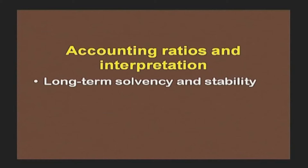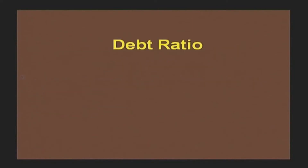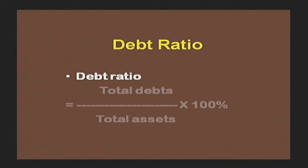Long-term solvency ratios indicate the amount of funds available with the company and its capacity to pay off debts on a regular basis. Long-term solvency and stability factors are considered. The first ratio showing long-term solvency position is the debt ratio. Debt ratio is computed as: total debts divided by total assets × 100.